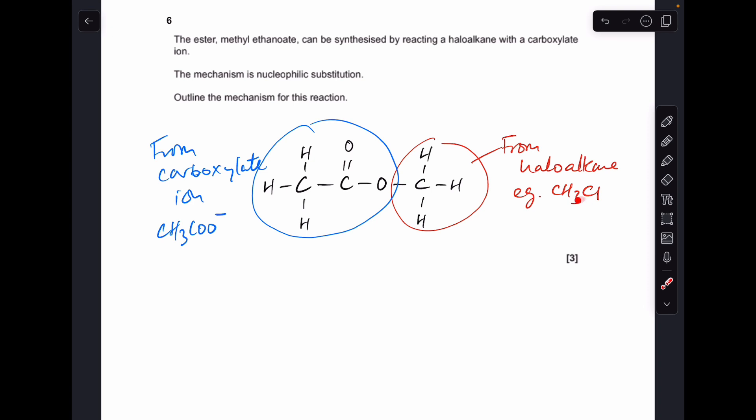The one I'm going to use is chloromethane. It can be any haloalkane as long as it's got a methyl group, so chloromethane, bromomethane, or iodomethane would all work. The carboxylate ion is providing this part of the ester here.